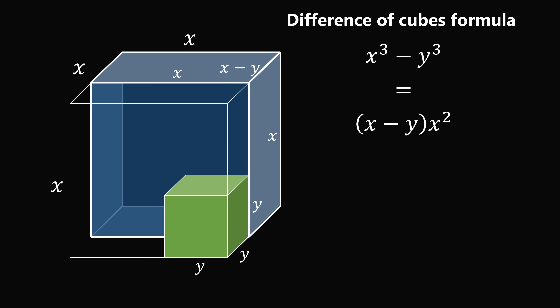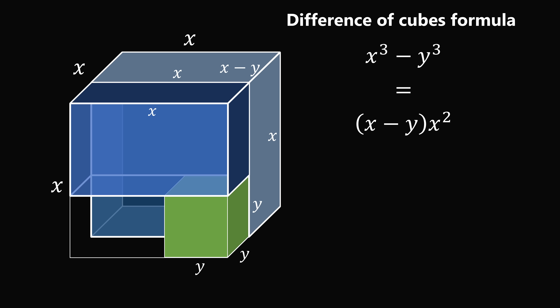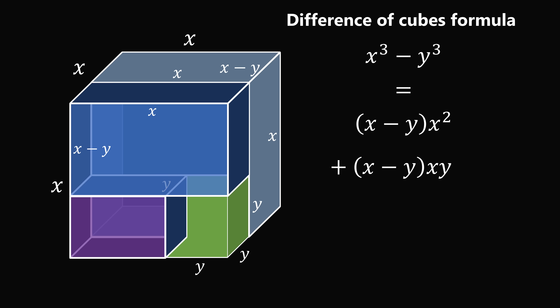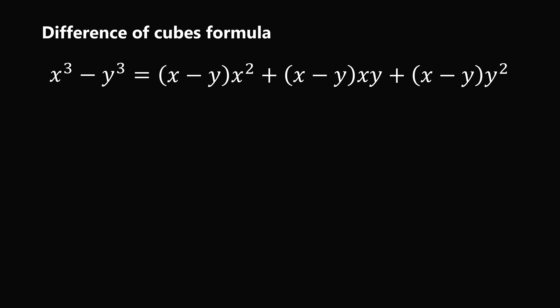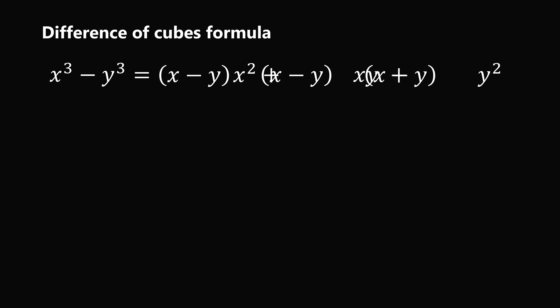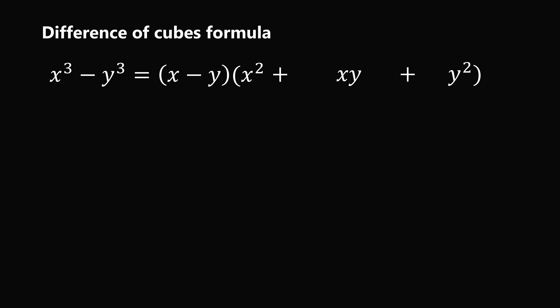The first prism has volume x squared times (x minus y). A second rectangular prism has side lengths x, y, and x minus y, giving volume xy times (x minus y). A third prism has dimensions y, x minus y, and y, giving volume y squared times (x minus y). All three terms share a factor of x minus y, so we factor that out to get x minus y, multiplied by x squared plus xy plus y squared. This is the difference of cubes formula.